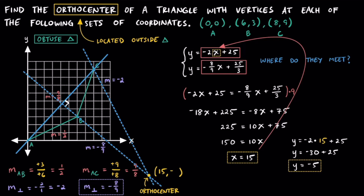The orthocenter is located at (15, negative 5) in quadrant 4. For good measure, here's the third segment BC — if we draw a perpendicular line to BC that goes through point A, we can see it also passes through (15, negative 5), the orthocenter. Each of the three dashed lines is perpendicular to one side of the triangle and passes through the opposite vertex. Remember that for an obtuse triangle, the orthocenter is located outside the triangle.